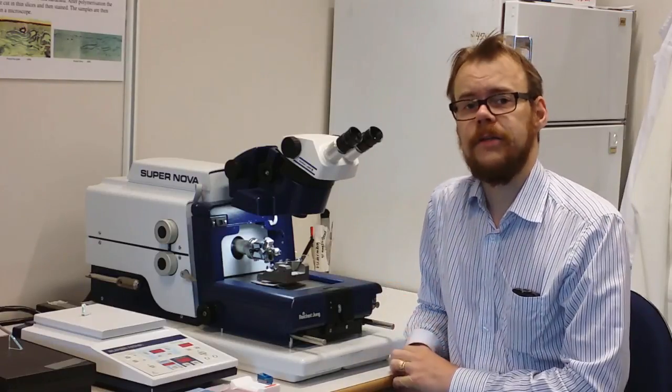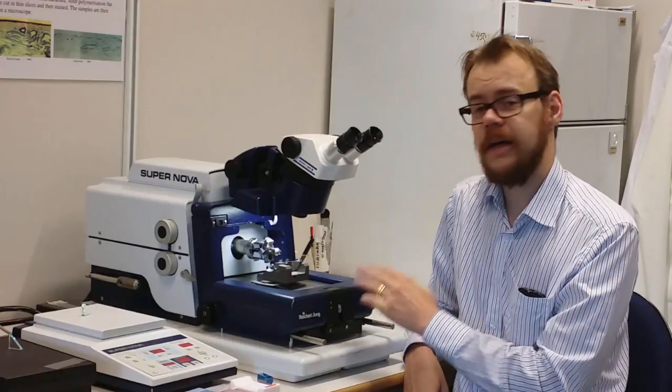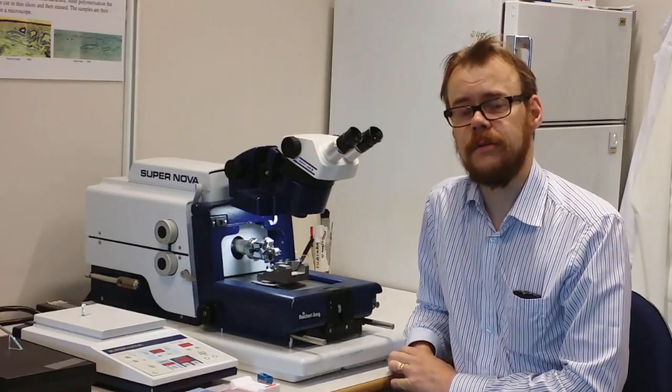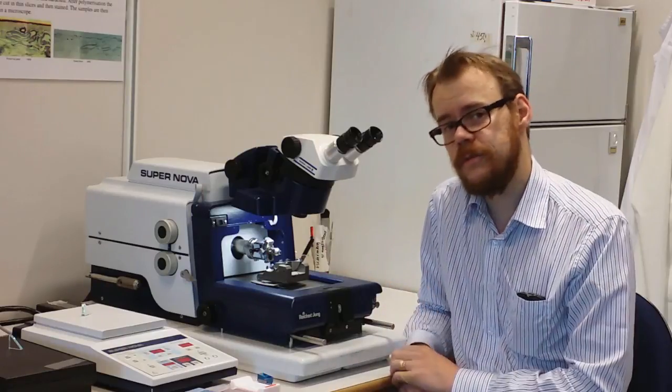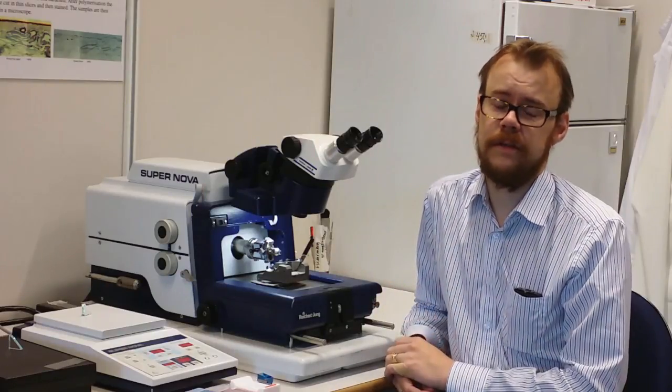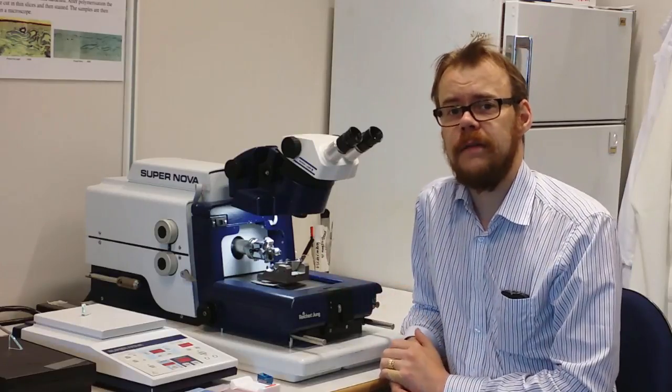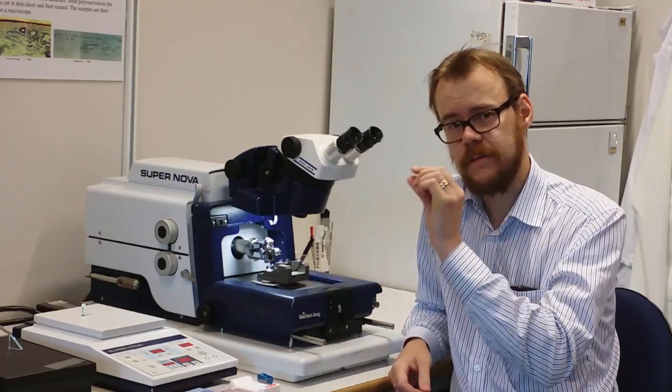Hi, this is an ultra microtome machine. This machine can cut very thin slices of the sample that you're going to do transmission electron microscopy on. You can also use it for light microscopy, but then you use thicker samples. This machine can go down to 50 nanometer in slices, the thickness of the sample that is.